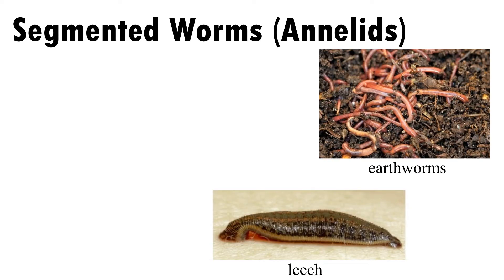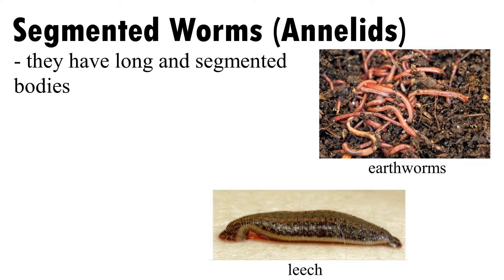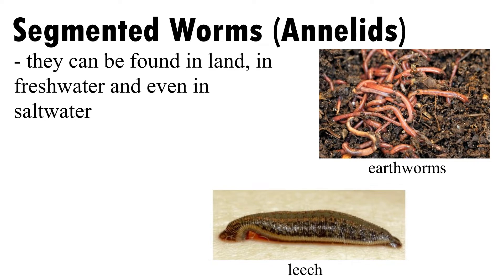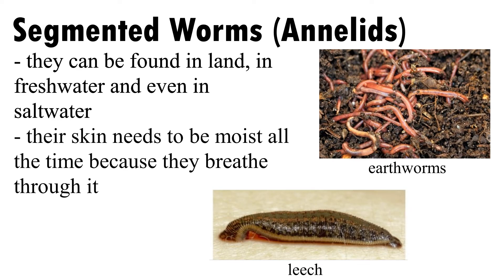Segmented worms are annelids. They have long and segmented bodies. Their body structure allows them to burrow in the soil or swim in the water easily. They can be found on land, in fresh water, and even in salt water. Their skin needs to be moist all the time because they breathe through it.